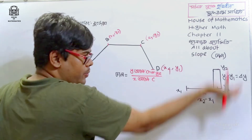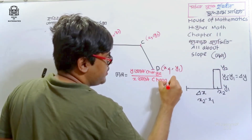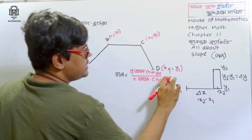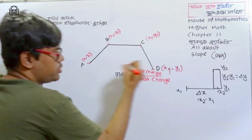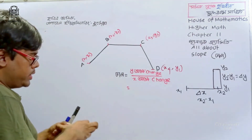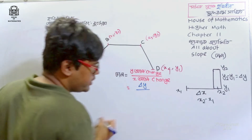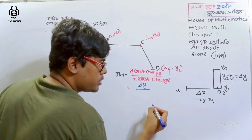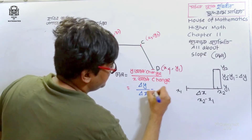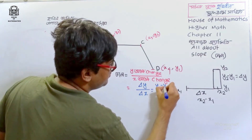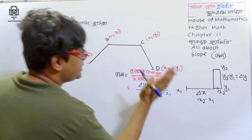y of change divided by x of change, and simply: the gradient equals delta y — that is, y2 minus y1 divided by x2 minus x1.